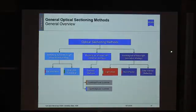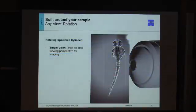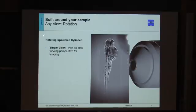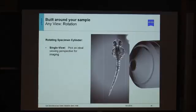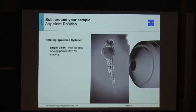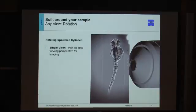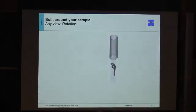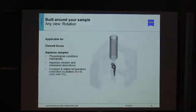Now let's move to the excitation strategy branch of the optical sectioning family. I'd like to start with the light sheet system. One of its great advantages is that the system is built around the sample — you can take a specimen cylinder or syringe and orient it in any way you need for imaging. In case you need to rotate your sample, the light sheet system is the system you should use. You can also apply certain technological conditions like accurate temperature control and CO2 concentrations.